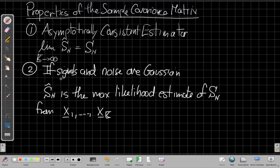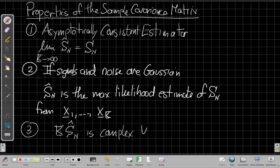Another important property is a maximum likelihood property. If the signal and noise are Gaussian we can actually show that the sample covariance matrix is the maximum likelihood estimate of the true covariance matrix for a given set of K snapshots. Another important piece of terminology is that if we bring the normalization back out front, there's a name for this in the statistics literature. This is a complex Wishart matrix.